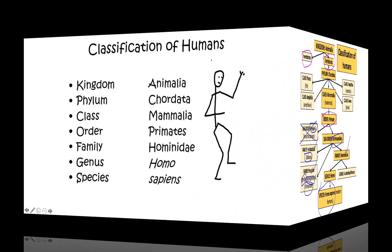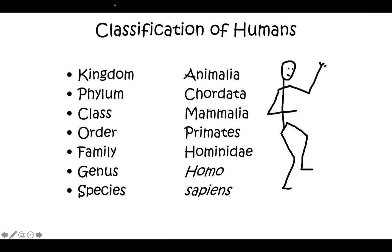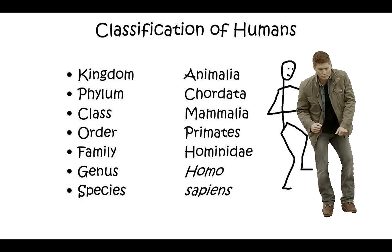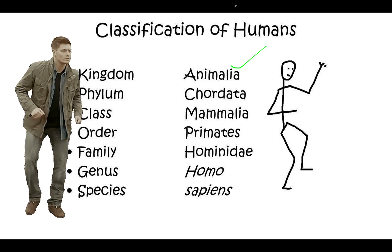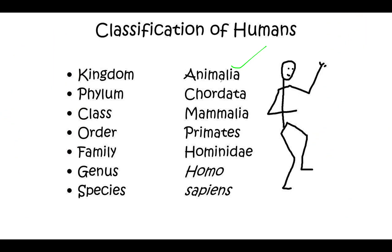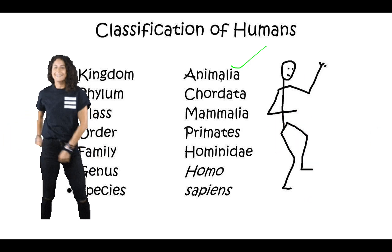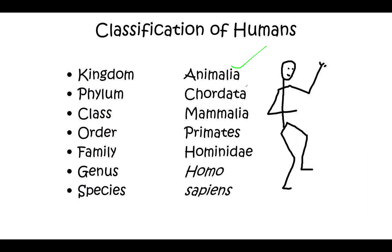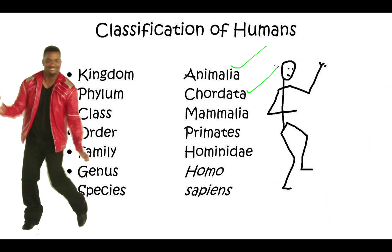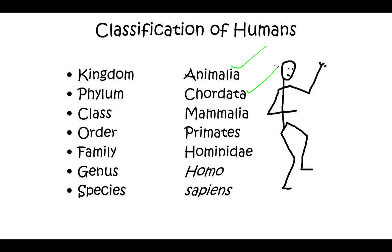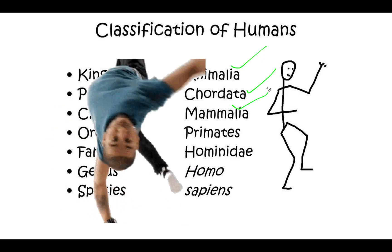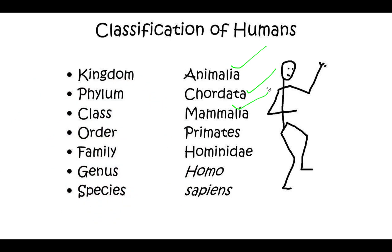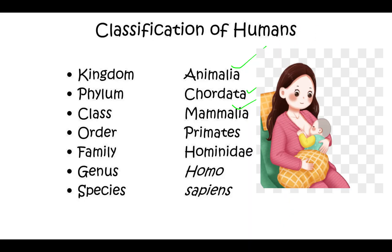To recap the classification of humans: we belong to the kingdom Animalia because we are multicellular organisms — our cells have a nucleus and cell membranes, but no cell walls like a plant cell. We belong to the phylum Chordata, meaning we are animals with a spinal cord or vertebral column. We belong to the class Mammalia because we are warm-blooded chordates that give birth to live young, and females have mammary glands that secrete milk to nourish their young.